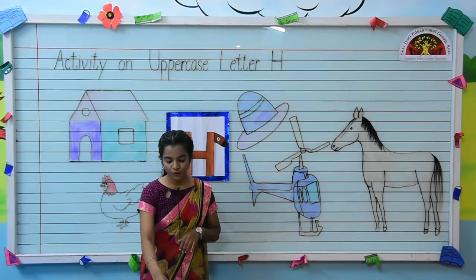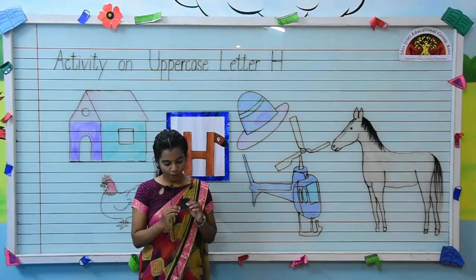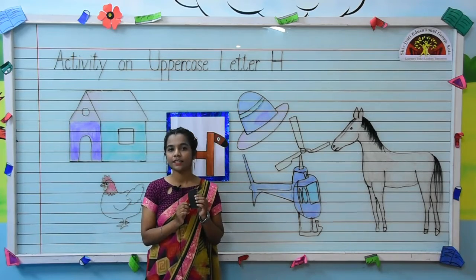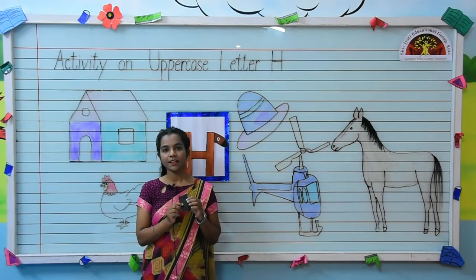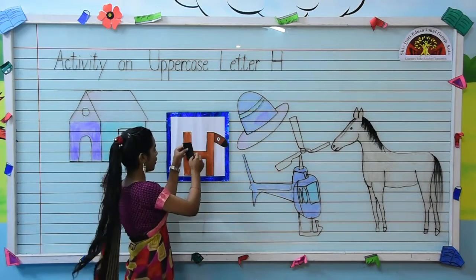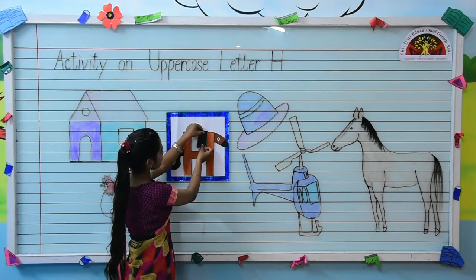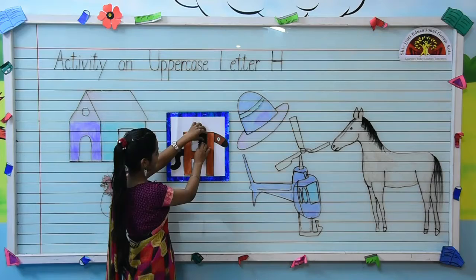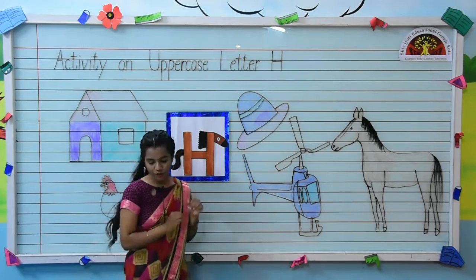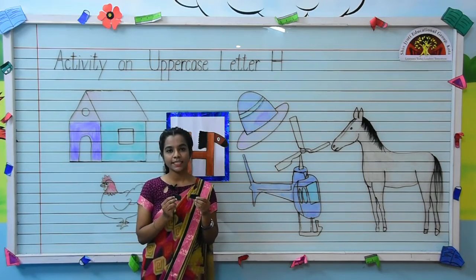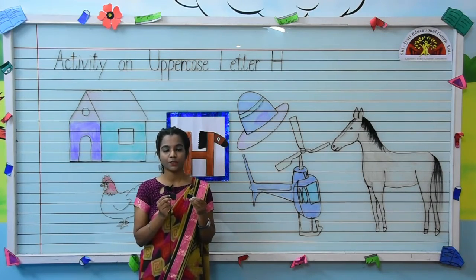So kids, what are these? These are hair — hair of a horse. Paste it like this. Now kids, what are these? These are feet.